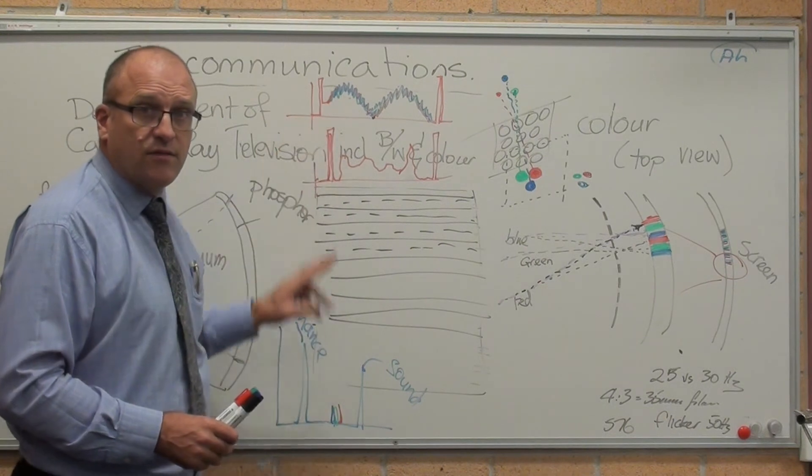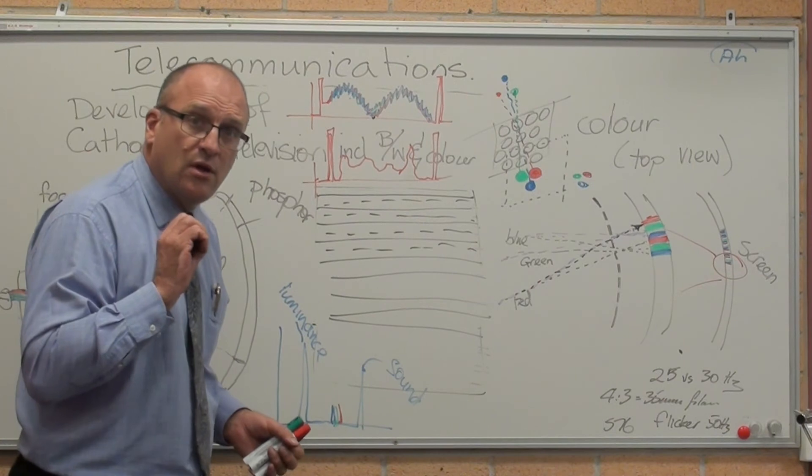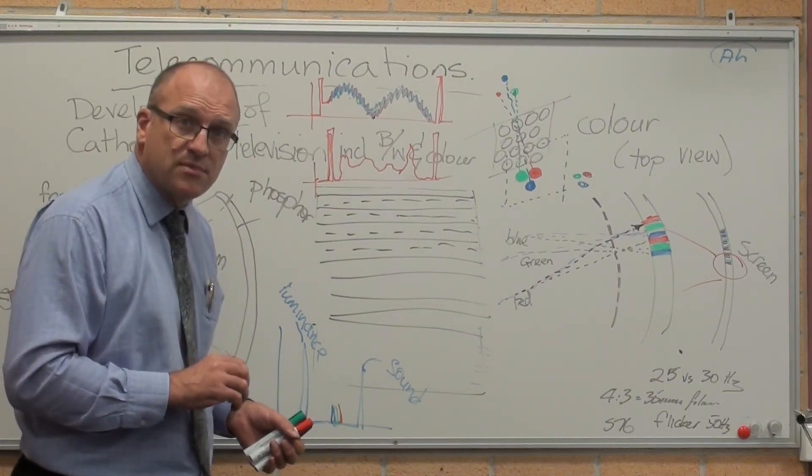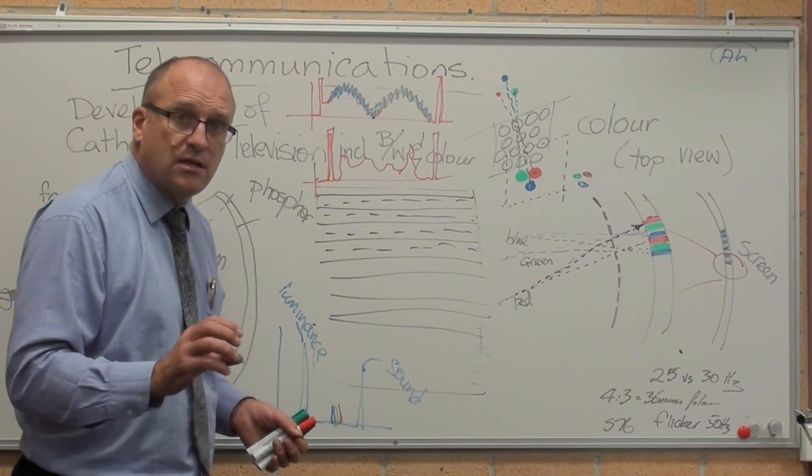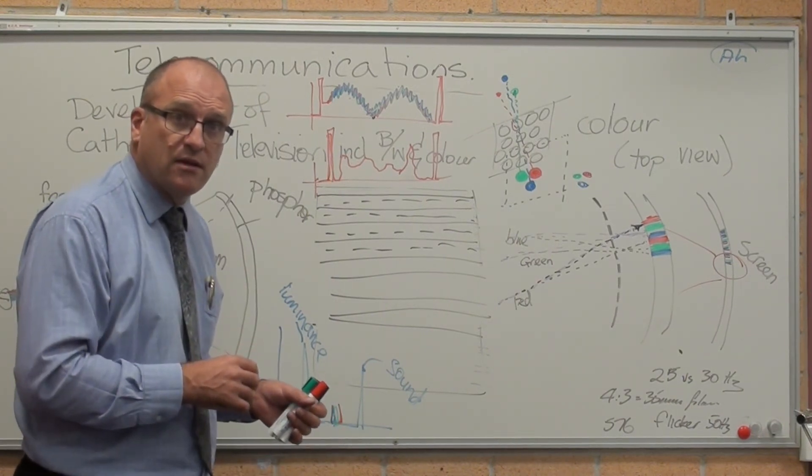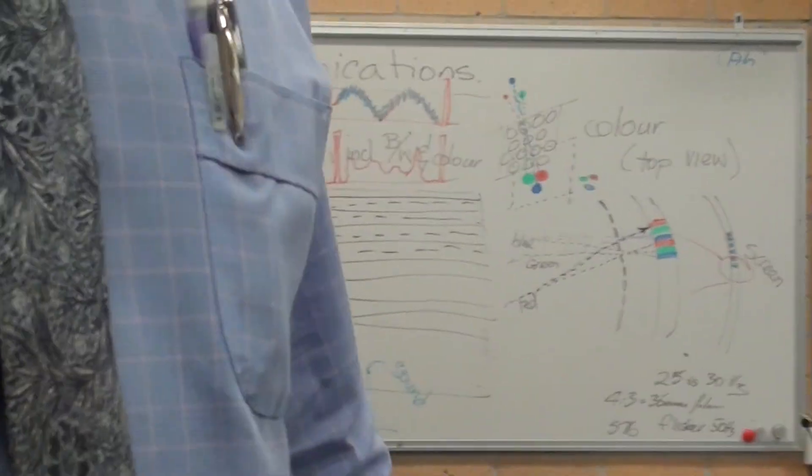Coloured televisions not only picked up brightness and sound, but they also picked up the signal frequency for each of the three electron beams. That's how television worked. That's the development of cathode ray television. That's what happened. Thank you.